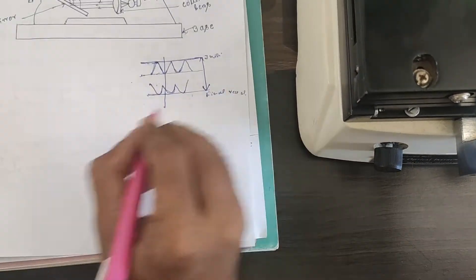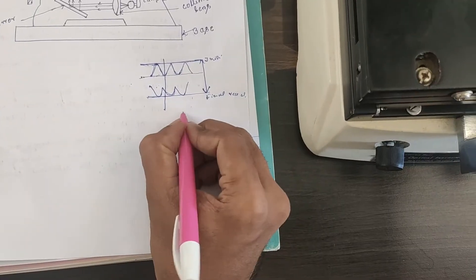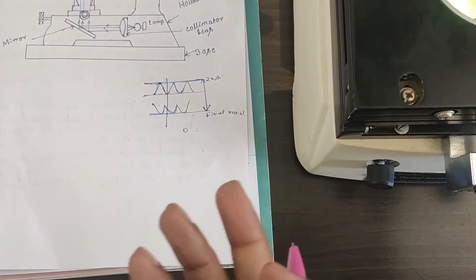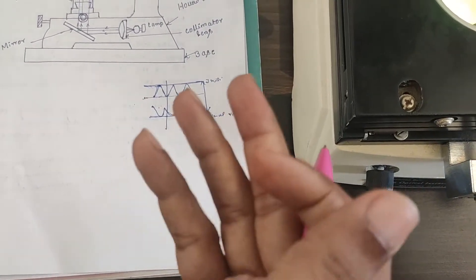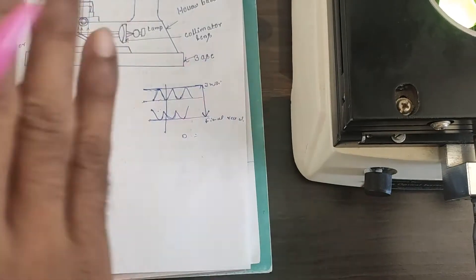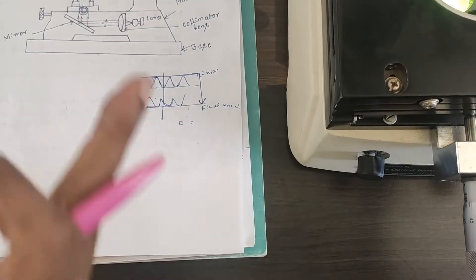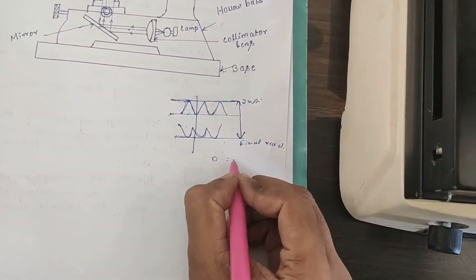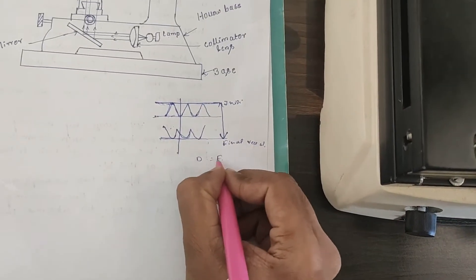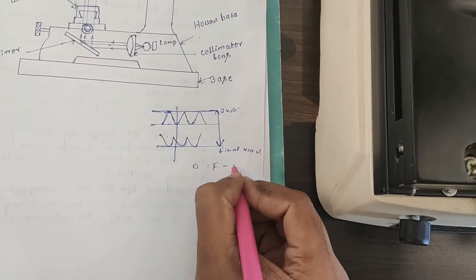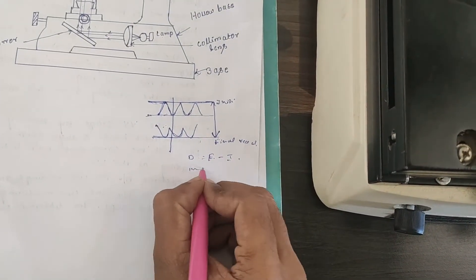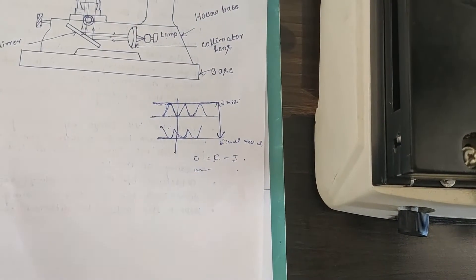The difference between the final reading and the initial reading — that is, final minus initial — gives you the major diameter of the thread.